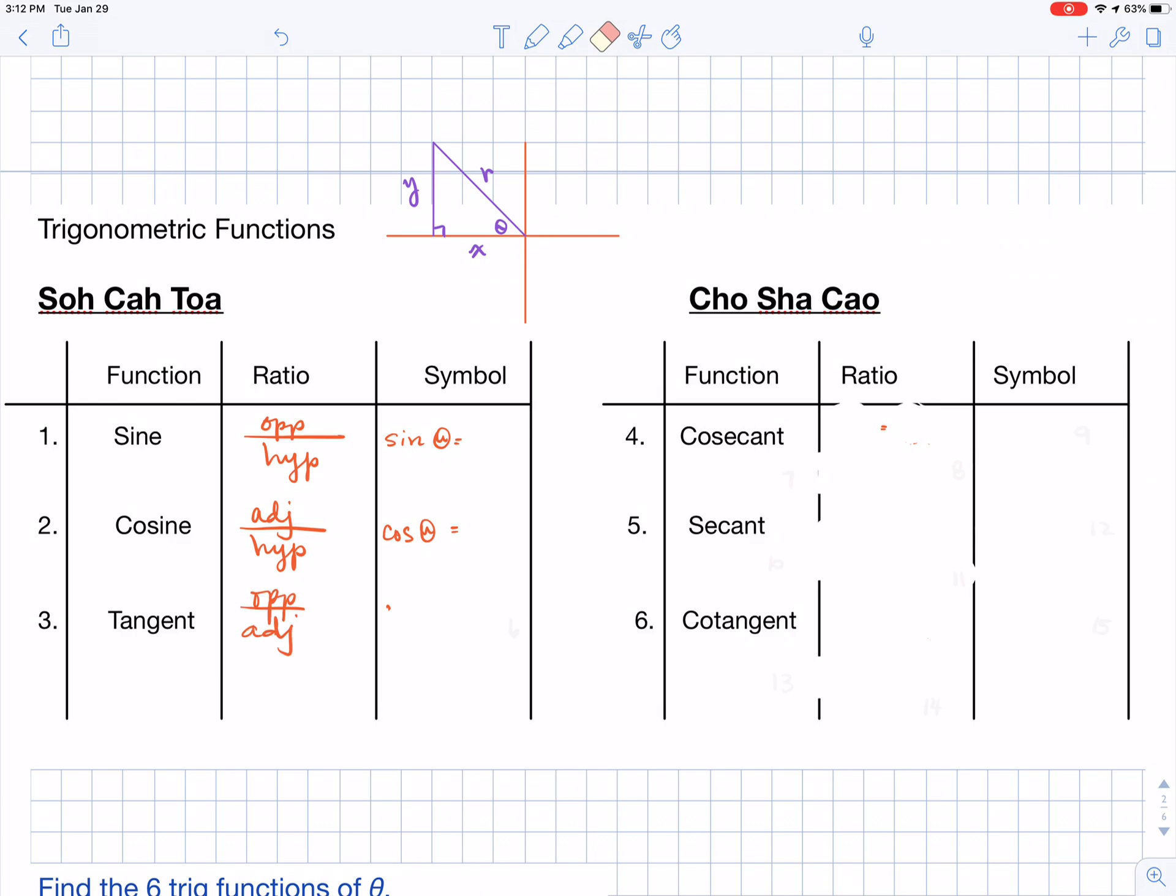Tangent is going to be opposite divided by adjacent, and we have an abbreviation of tan for this one.